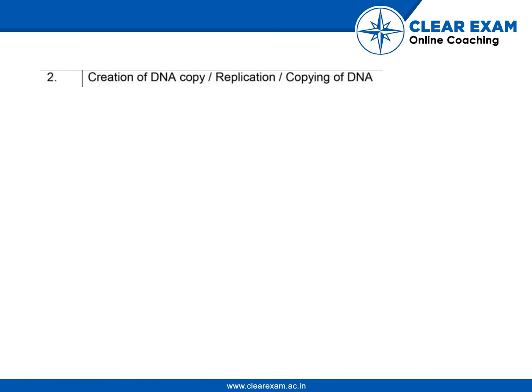What happens to the DNA? It is simple — DNA is copied from the parent to the offspring. We can write 'creation of a DNA copy' or 'copying of DNA.' During reproduction, DNA copying is a very important step, as it is carried and passed to the offspring. I hope everybody got the solution.